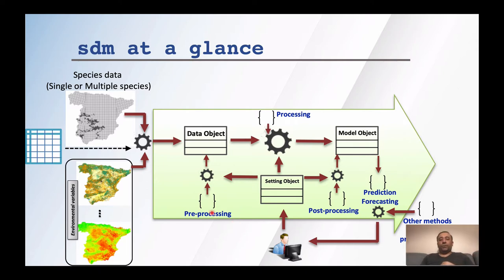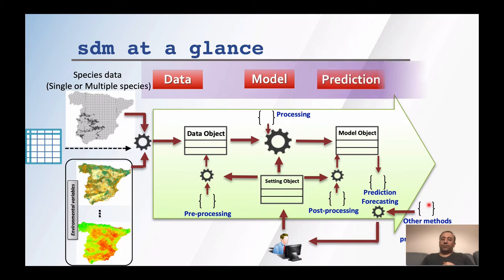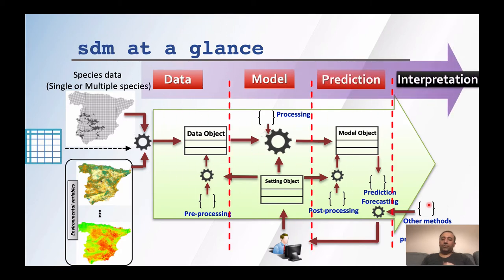The workflow starts with different forms of data — tabular or spatial. When data enters the workflow, there is a pre-processing step to prepare the data object. The user can specify settings for developing the model, then processing is done and the model object is created. There are functions for post-processing, predicting, and evaluating the models. This workflow can be summarized as: Data → Model → Prediction → Interpretation.